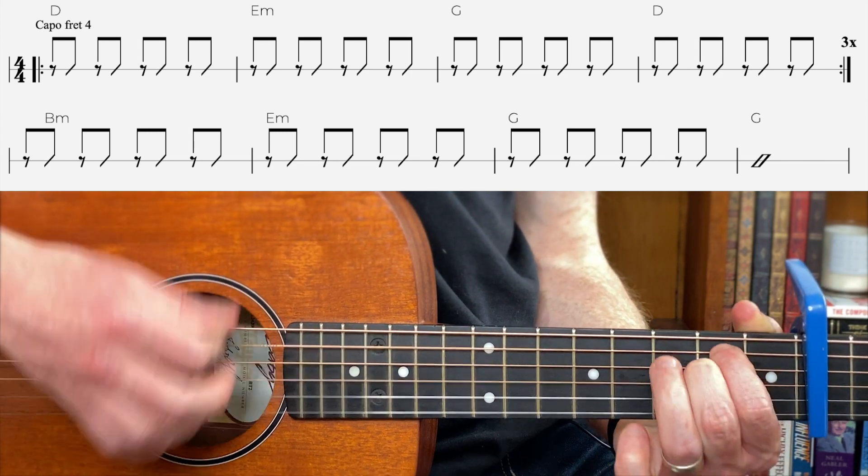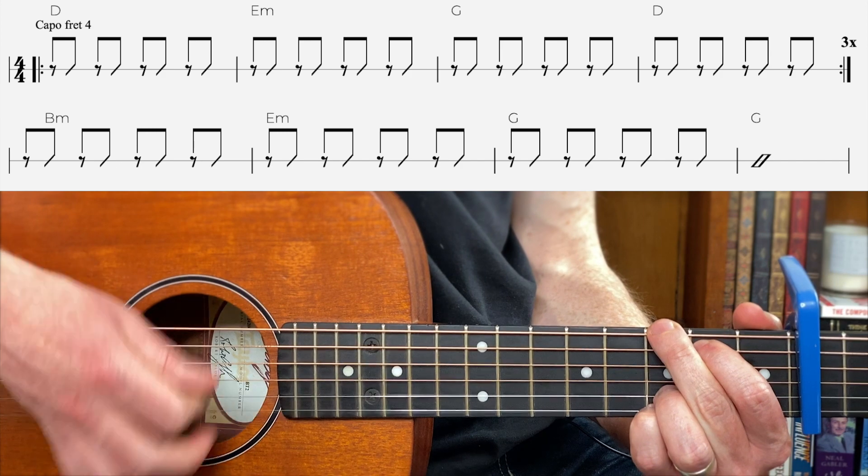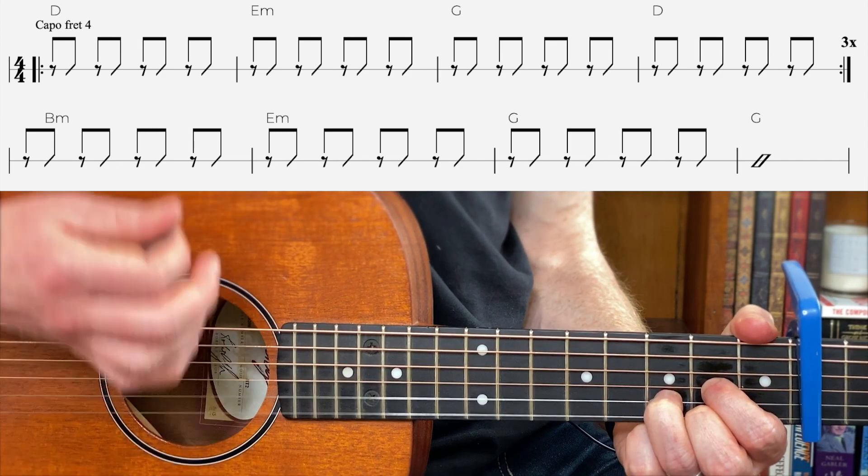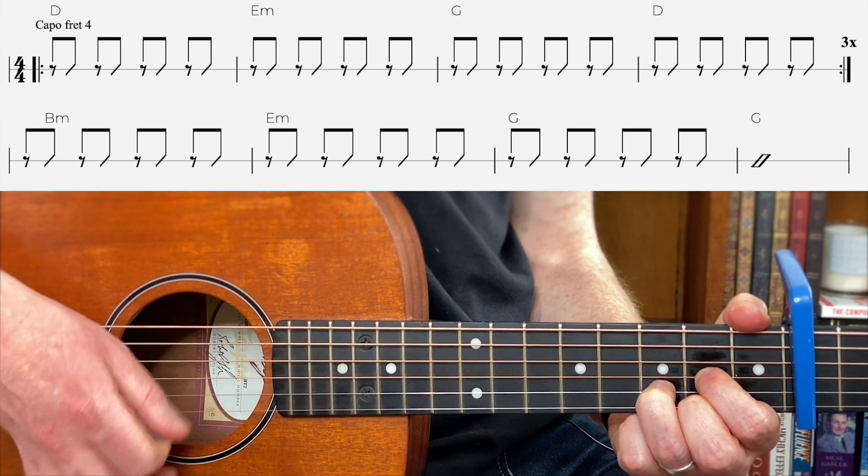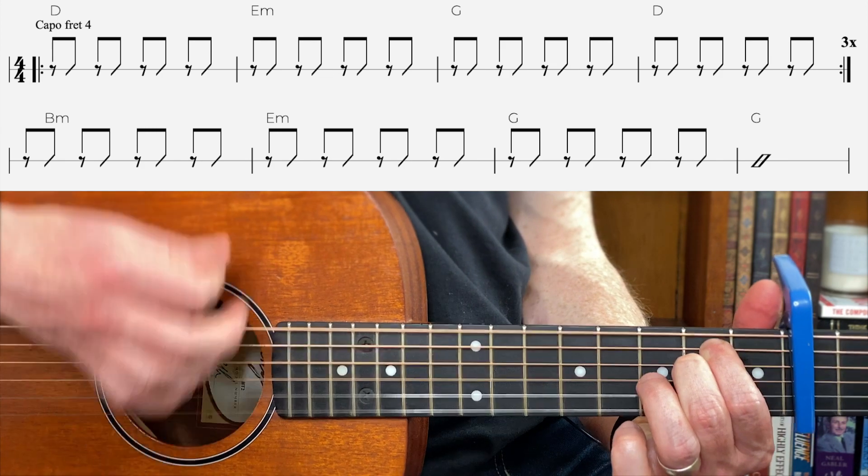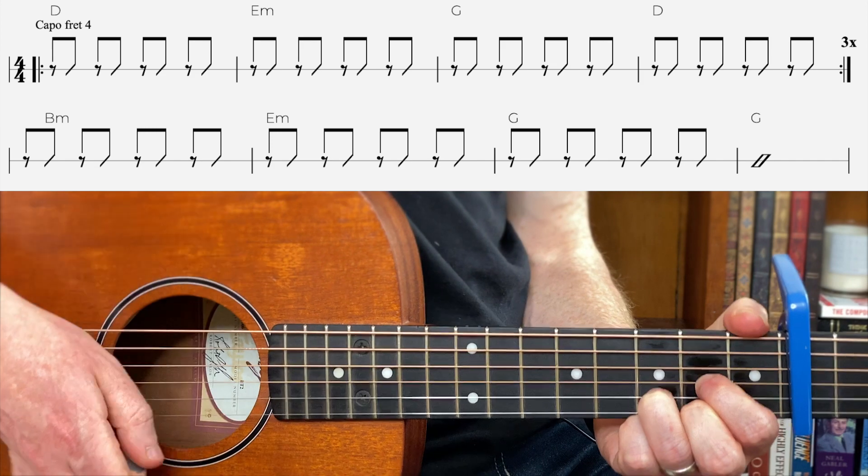E minor. Then G. Then D. Now we're going to start that line all over again. Here we go. Two, three. E minor. Then G.